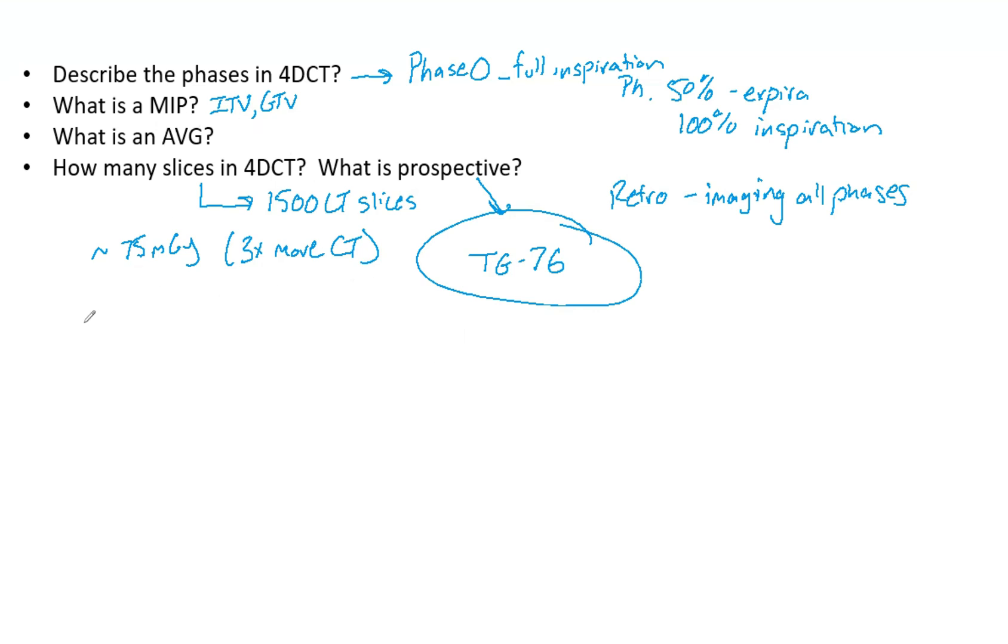While I'm here, there is also something called the MINIP. So we got the MIP, the average, and now a MINIP. This is the minimum intensity projection. It is the full excursion of a tumor of lower density than the surrounding material. So this is really advantageous for something like liver.